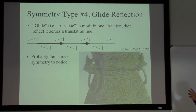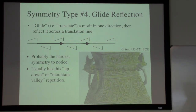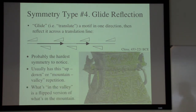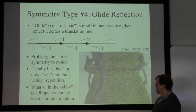The glide reflection is the hardest kind of symmetry to see and also the hardest for artists to invent and incorporate into their craft. This makes it a fairly important one from the standpoint of distinguishing the art of some cultures from others. Most glide reflections exhibit that mountain-valley or up-down repetition, where what's inside the valley is a flipped version of what's inside the mountain.